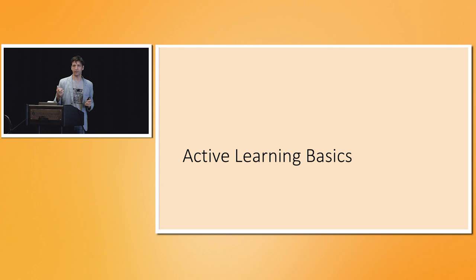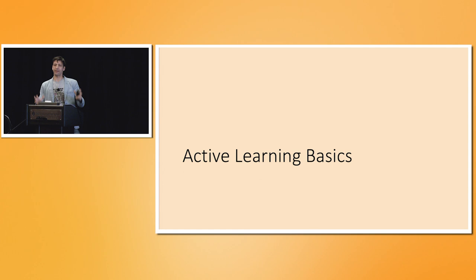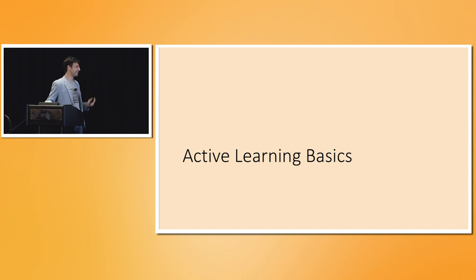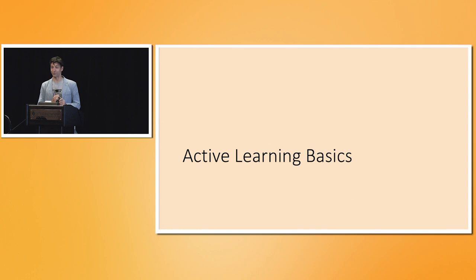The worst-case scenarios for active learning are bad — there exists, for any acquisition function, a dataset such that it does no better than IID sampling, and in fact could do worse. But we're often not in the worst case. There are obvious toy cases like simple thresholding problems where you can show exponentially better sample complexity using active learning. Our question is: can we at least heuristically or empirically get active learning to work on real high-dimensional deep learning problems that aren't well-characterized theoretically?